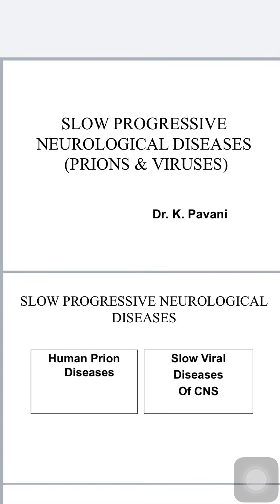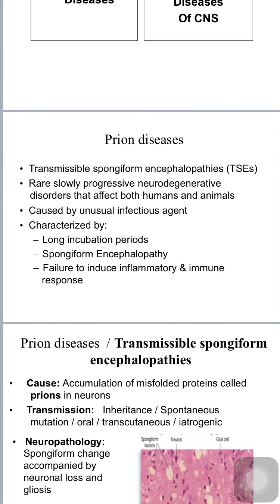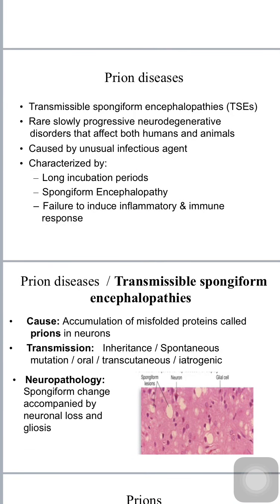Today's class is on slow progressive neurological diseases with respect to prions and viruses. We're going to discuss this topic under two headings: human prion diseases and slow viral diseases of the central nervous system.